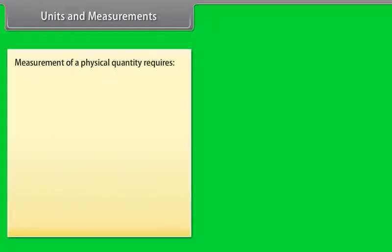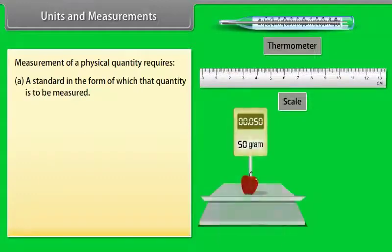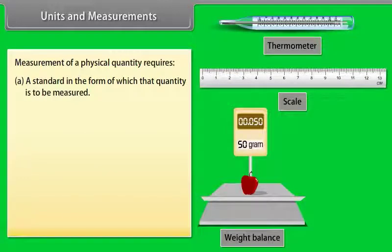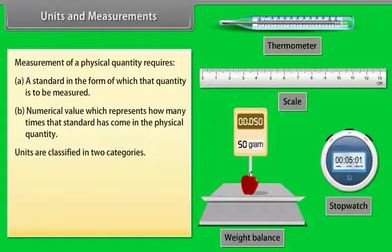Units and measurements play a very vital role in the study of physics. Measurement of a physical quantity requires a standard in the form of which the quantity is to be measured, and a numerical value which represents how many times that standard has come in the physical quantity.